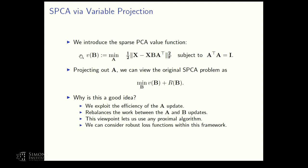Why is this a good idea? We exploit the efficiency of updating A — computing an SVD is cheap. This rebalances the work between the A and B updates. Furthermore, it allows us to use any proximal algorithm, and we can also consider robust loss functions to do robust sparse PCA. Details can be found in the corresponding paper.